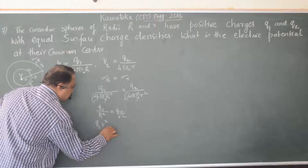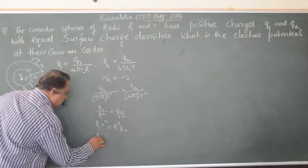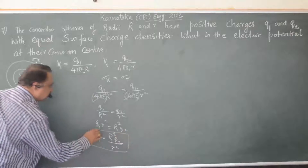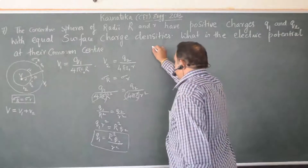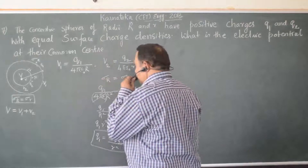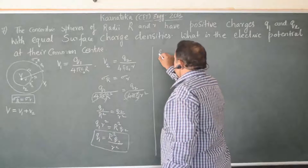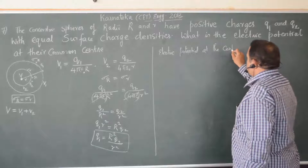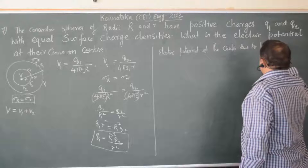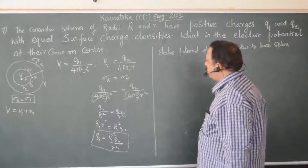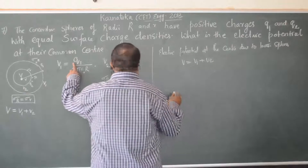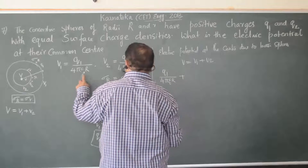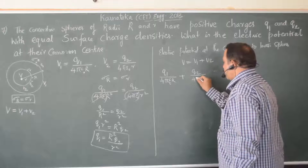Cross-multiplying gives Q1·r² equals R²·Q2, so Q1 equals R²·Q2 divided by r². This is the charge on the outer sphere. Now, the net electric potential at the common center is V equals V1 plus V2, which equals Q1 divided by 4πε₀R plus Q2 divided by 4πε₀r.